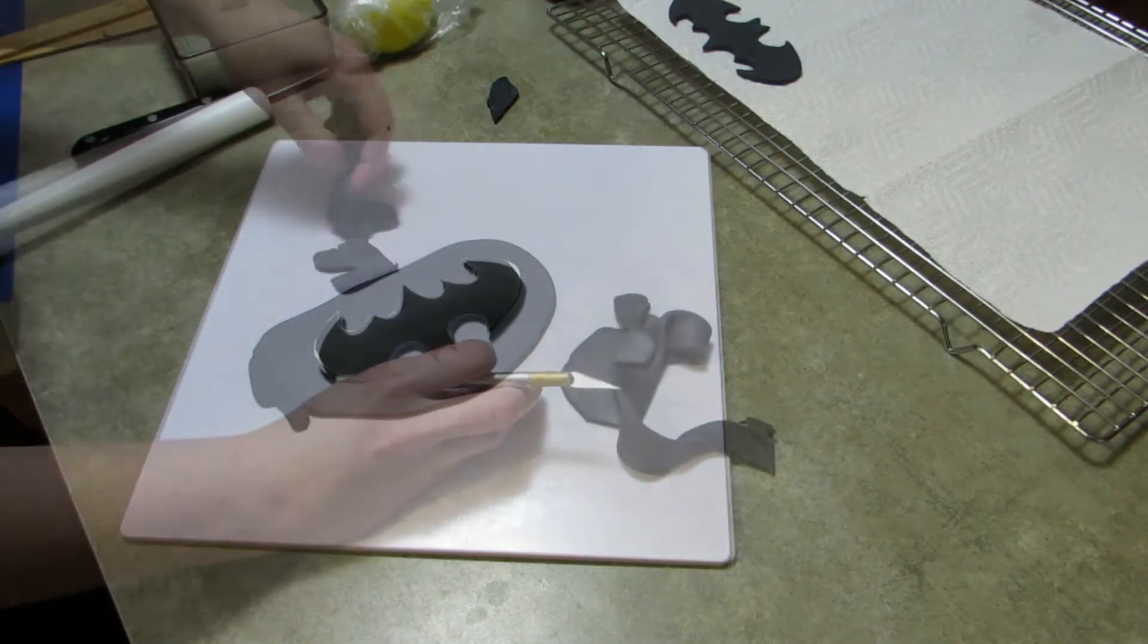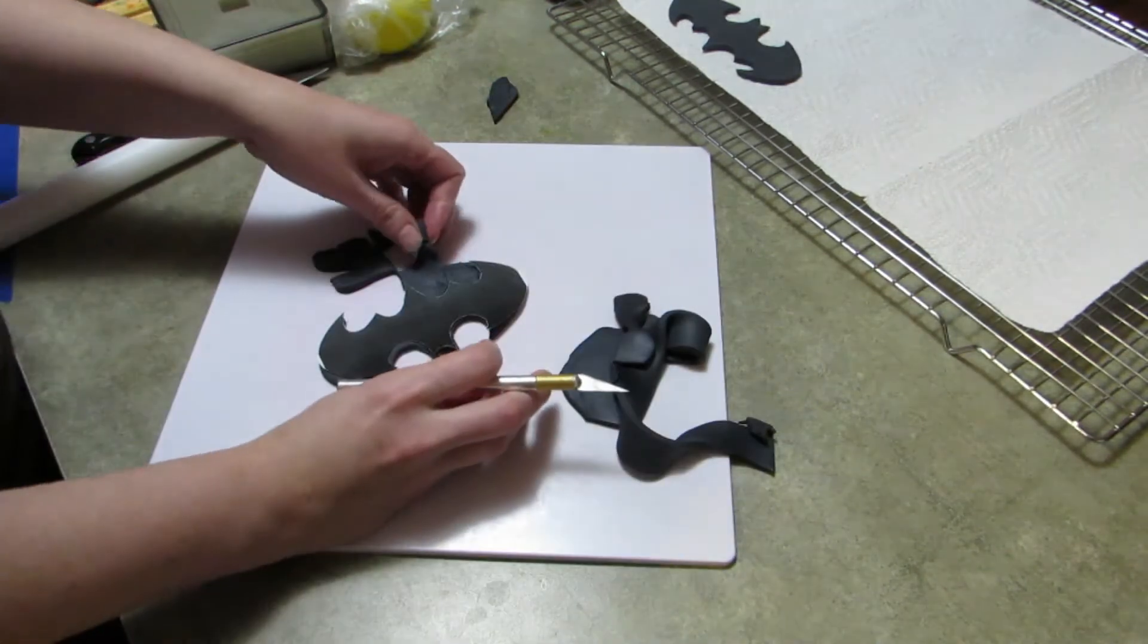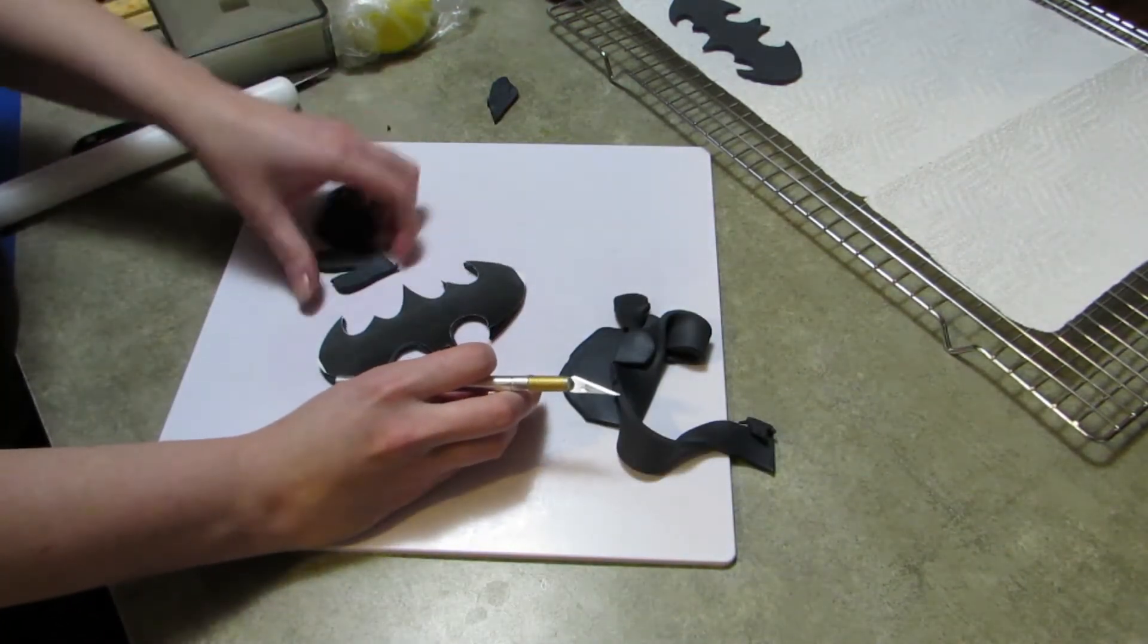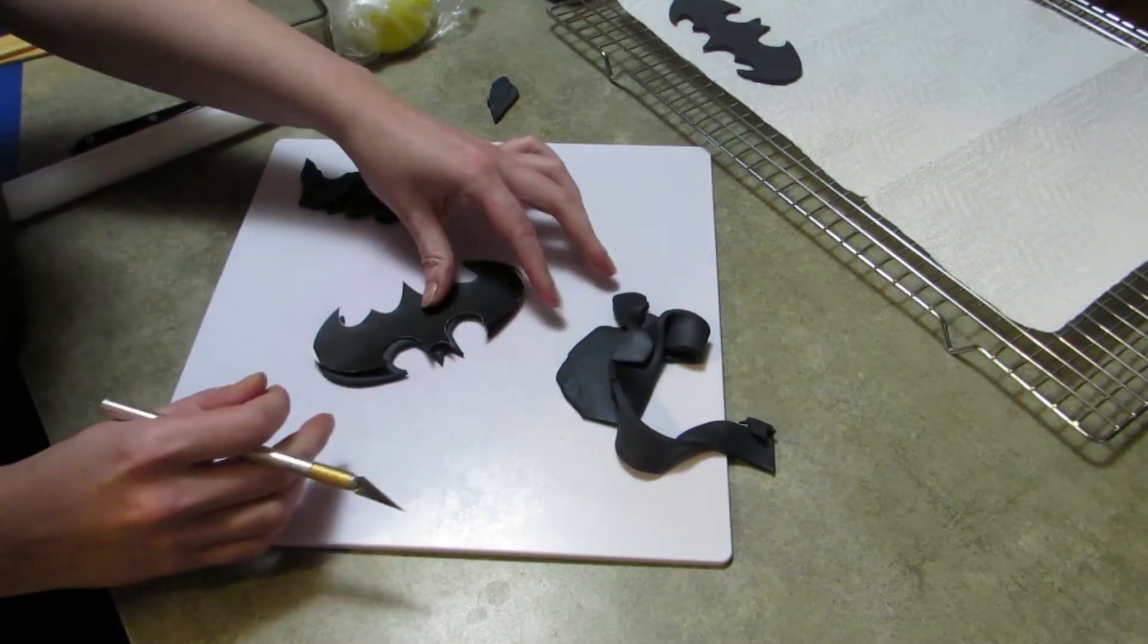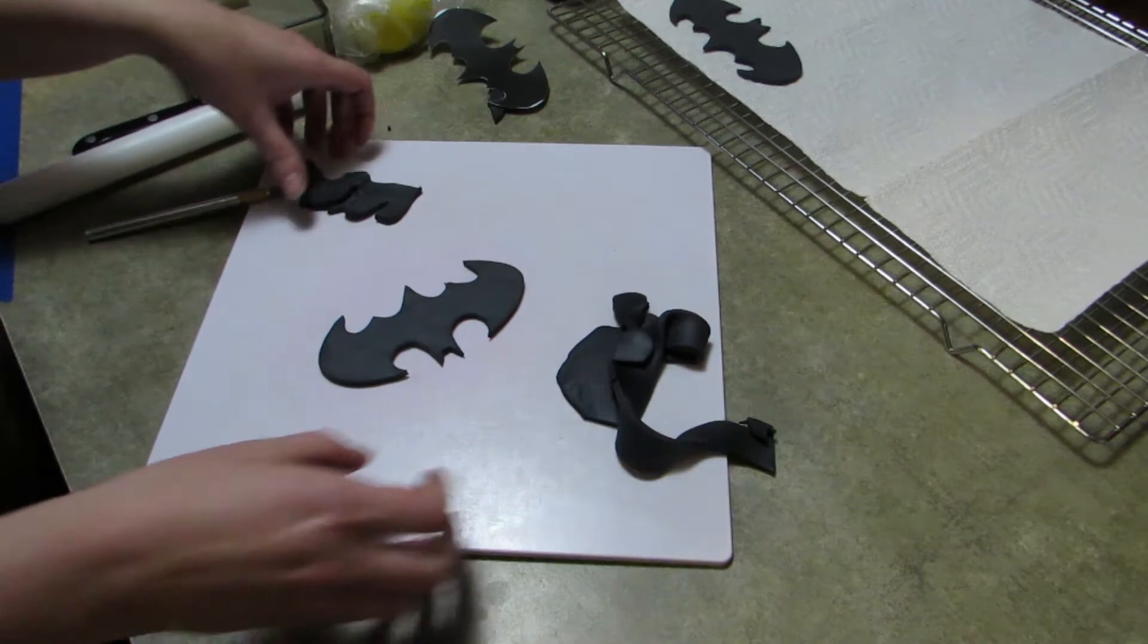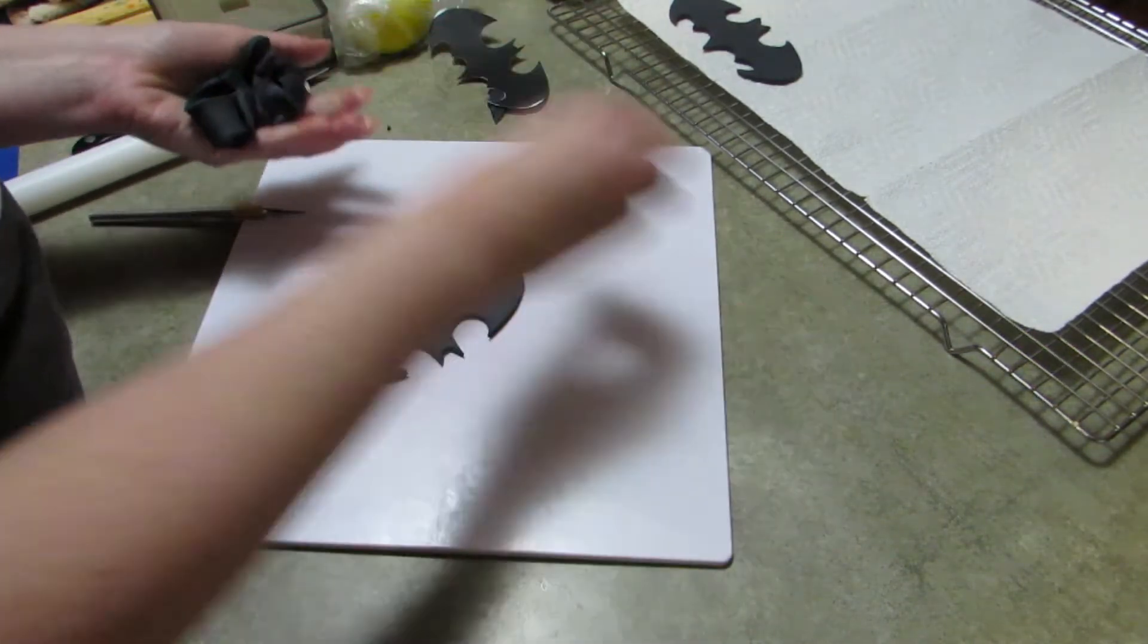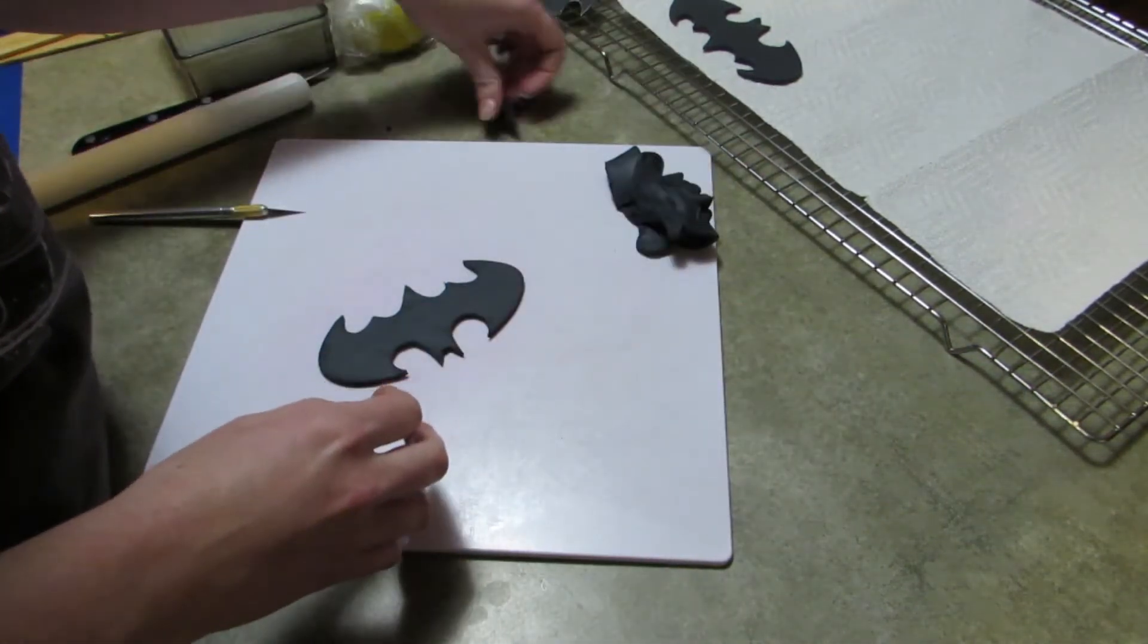I made three of the Batman symbols. One I'm going to have on a yellow background to make it look like the symbol in the sky, and the other two are going to say happy birthday. We're also going to make some buildings to make a skyline along the bottom for Gotham City.